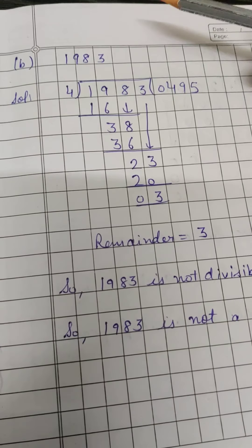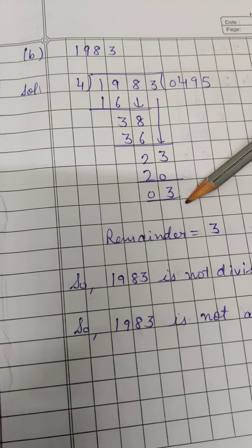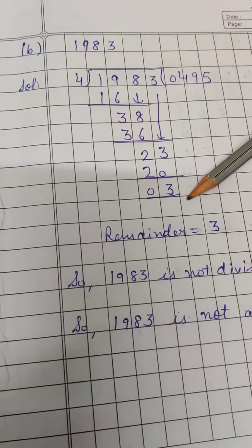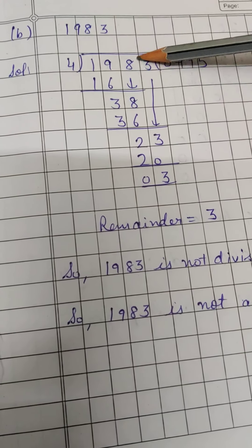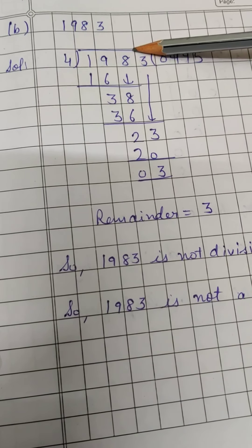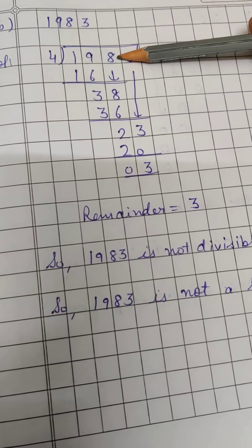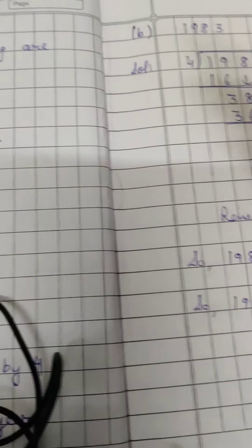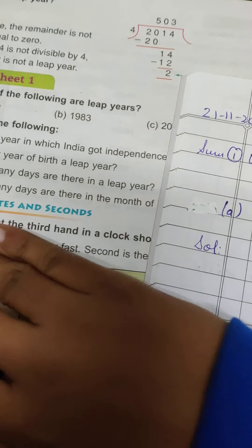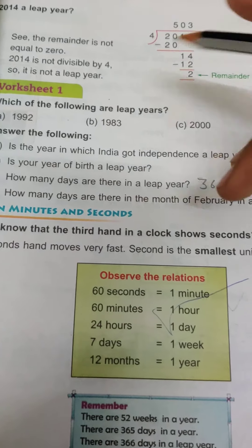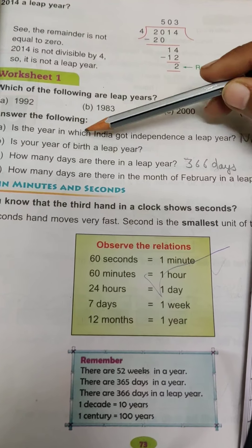Similarly for the other part, when we divided, the remainder came out as 3. If the remainder has any value other than zero, that means it is not divisible by 4, so it is not a leap year. The other parts follow the same procedure — you can work through them and find out.